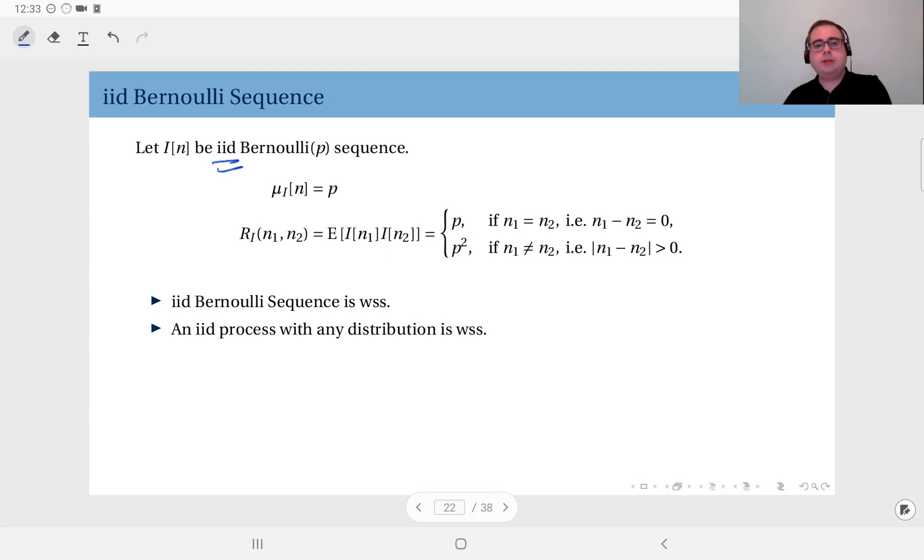Obviously, the mean is independent of time and equal to P, because at every time instance, it's a Bernoulli trial, so the mean is P. And when you look at the autocorrelation, it's essentially the correlation between the Bernoulli sequence at N1 and N2. Now, this expectation depends on whether N1 equals N2 or not, because if N1 and N2 are the same, then this is the second moment of a Bernoulli random variable, which is P.